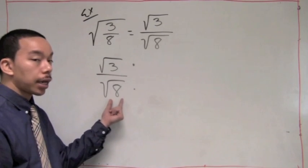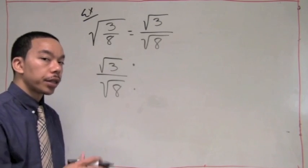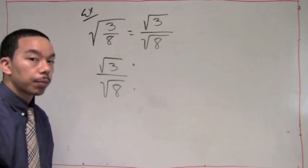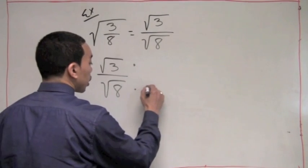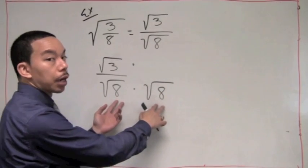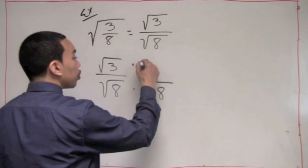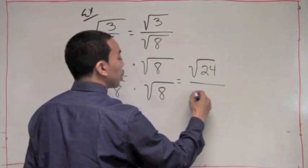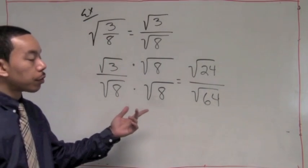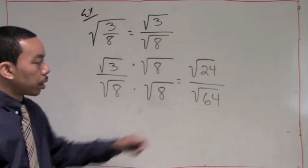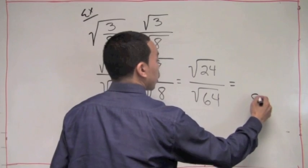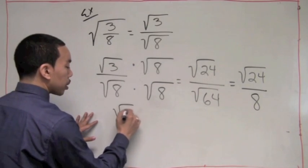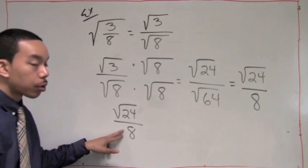Usually it works out if you multiply by the exact same denominator — most of the time, though not all of the time. So here I'll multiply by the square root of 8. Multiplying those two gives us 64, which is a perfect square, and that's what we want. So I have to multiply the top by the square root of 8 as well. We get the square root of 24 over the square root of 64. Now 64 is a perfect square — it's 8. The square root of 24 is not a perfect square. So we rewrite it as the square root of 24 over 8. There's no radical in the denominator, and that's what we want.